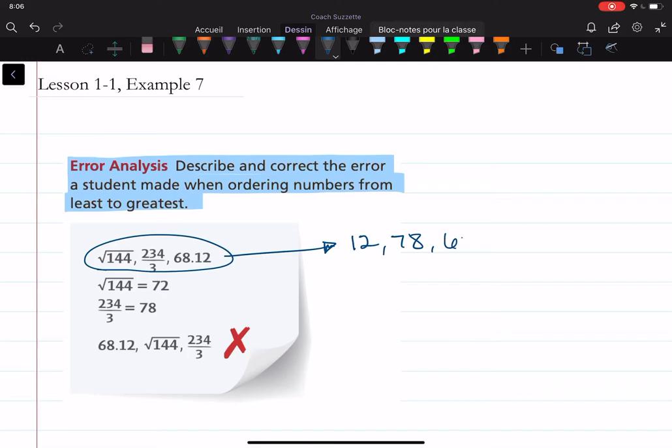78. And then the other number we have is 68.12. So if we were to order these from least to greatest, it would go 12. Actually, let me write it in its original form. It was the square root of 144. Next would be 68.12. And last would be 234 divided by 3.